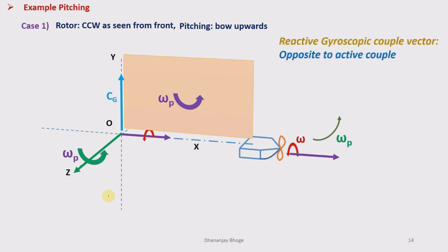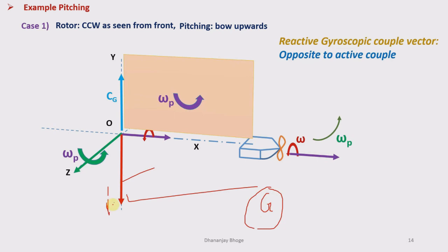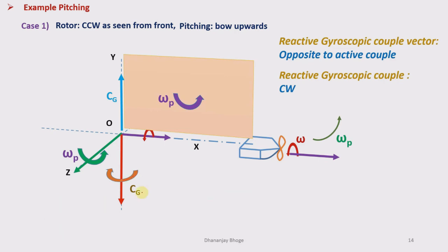We know that the reactive gyroscopic couple vector is opposite to the active couple vector, so it will go downwards along OY'. The vector shown in red is the vector of reactive gyroscopic couple C_r. To find the sense of the reactive gyroscopic couple vector C_r, we use the right-hand rule again: hold this vector in your right hand such that the thumb points in the direction of the arrow. Curling the fingers gives us clockwise rotation as seen from the top side — that is the sense of C_r.